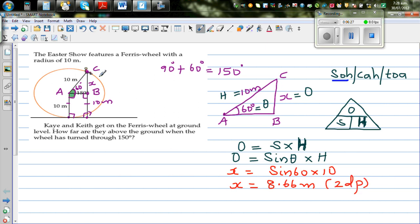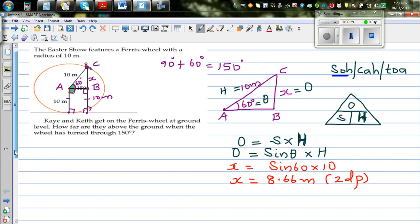Now the question is not to find X. To find the height of Keith. So you can say the height of Keith. Or Keith or Kay. Height of Kay and Keith or Keith. When they have traveled. I'm not writing the whole thing. When they have turned 150 degrees would be 10 plus X. That is 10 plus 8.66. Which is 18.66 meters. So they are 18.66 meters above the ground when the Ferris wheel has turned 150 degrees.